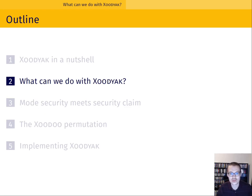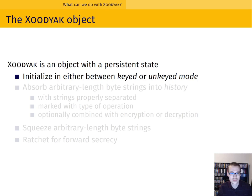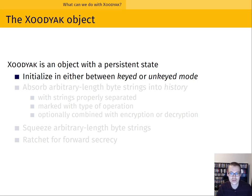What can we actually do with Zodiac? Zodiac is an object with a persistent state. You can initialize it in either an unkeyed or a keyed mode. Some examples of unkeyed modes would be an extendable output function or a hash function, and keyed modes include stream cipher, message authentication code, or authenticated encryption scheme.